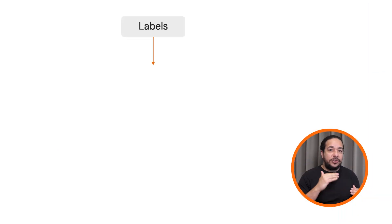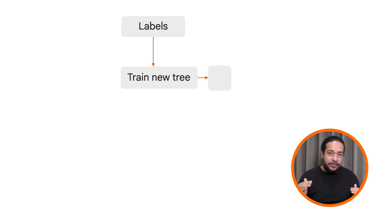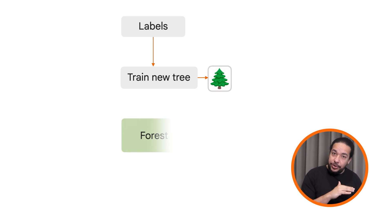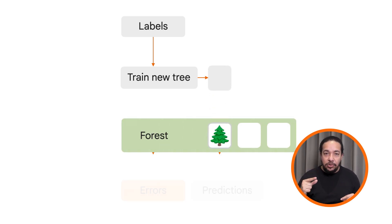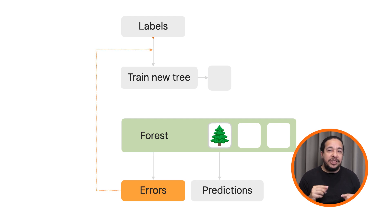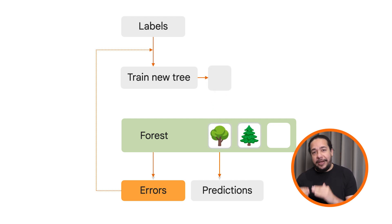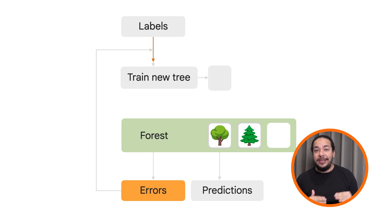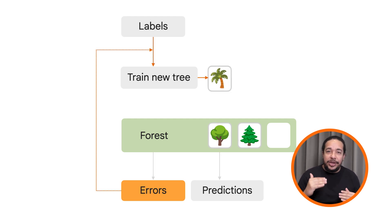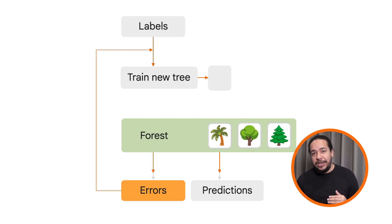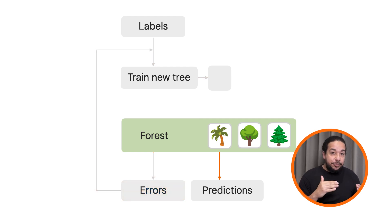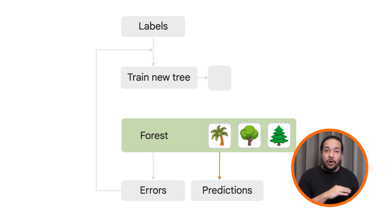The first tree is trained on the entire dataset. The second tree is trained on the residuals of the first tree, which are the errors between the predictions of the first tree and the actual values. The third tree is trained on the residuals of the second tree, and so on. This process is repeated until the desired accuracy is reached or the number of trees is exceeded.